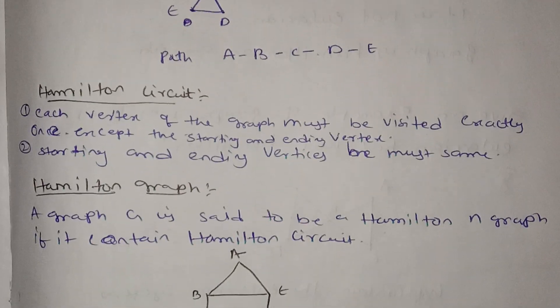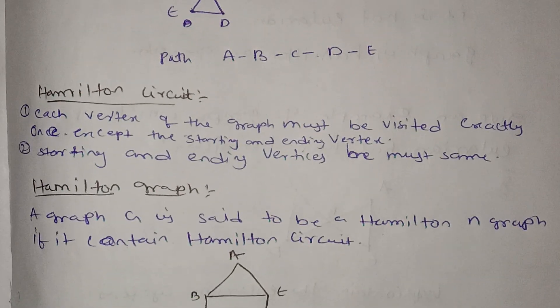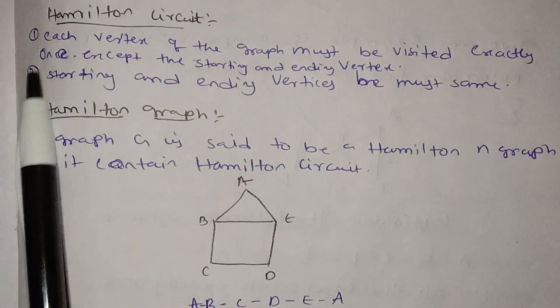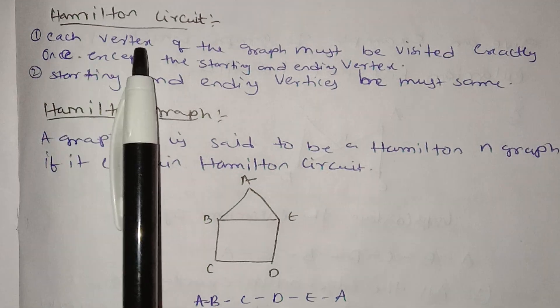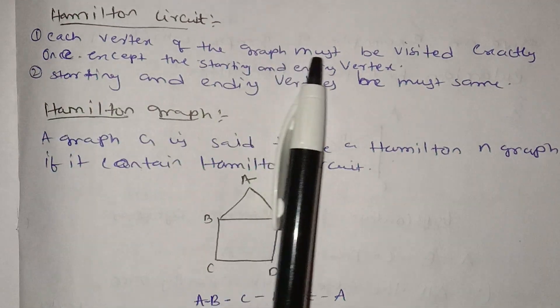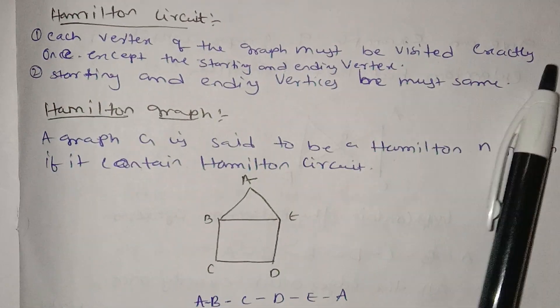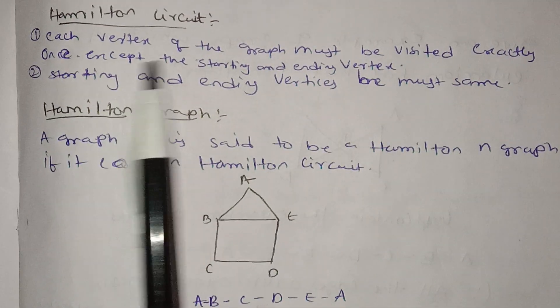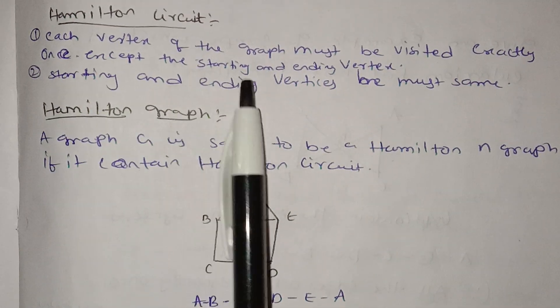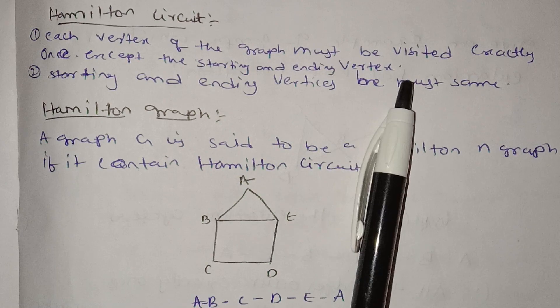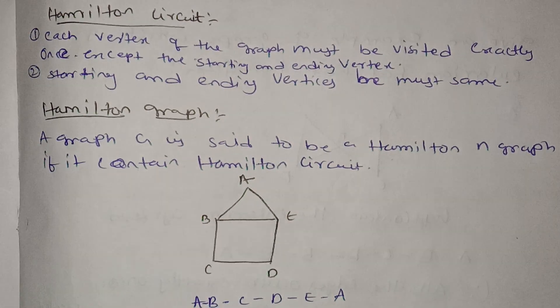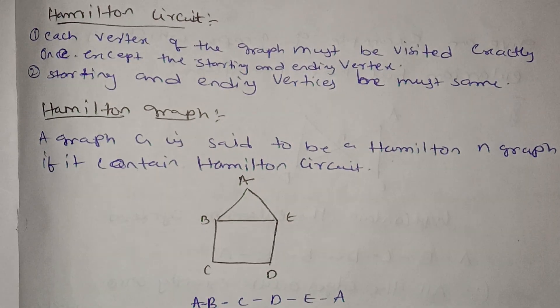Next is Hamilton circuit. In a Hamilton circuit, each vertex of the graph must be visited exactly once, except that the starting and ending vertex is the same.